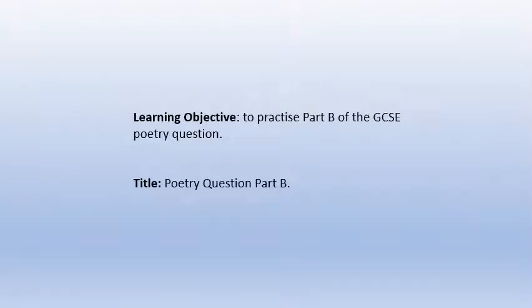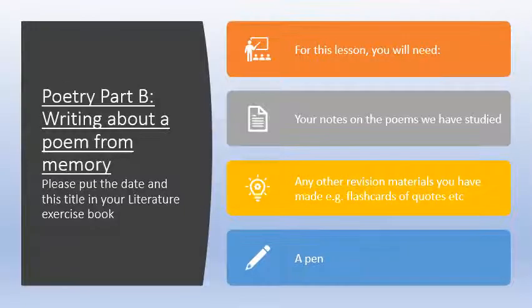Our learning objective today is to practise Part B of the GCSE poetry question, so the title is 'Poetry Question Part B'. What you need for today's lesson is slightly different: your notes on the poems we have studied — your exercise book with all the notes in — any other materials you've made, flashcards with all the quotes we've done each lesson, and a pen.